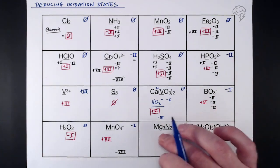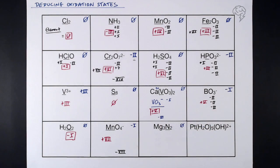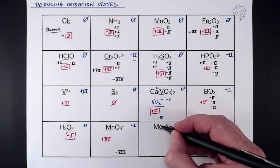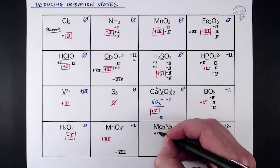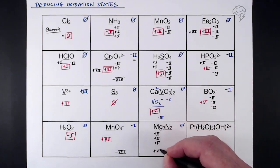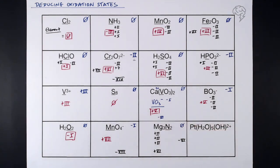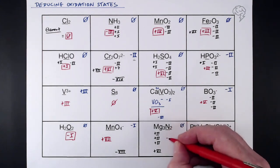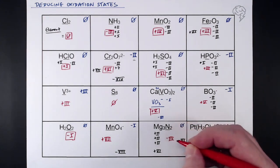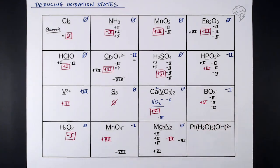Magnesium nitride, Mg₃N₂: overall oxidation state is zero. We're finding nitrogen since it can have a variable oxidation state. We've got three lots of magnesium, group 2, so three lots of +2 gives +6 in total. We need to get from +6 to zero, that's -6, but we have two nitrogen atoms, so each nitrogen must be -3.